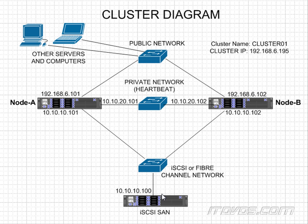So in a traditional failover cluster, we have storage that we've created — let's say we're calling it the E drive. When node A is active, it will be the one to read and write to the E drive. In the event of a failure to node B, node B will then read and write to the E drive. The E drive won't be accessed by the passive node, just the active node. And of course, that E drive is the data that the application is using, held on our shared storage.